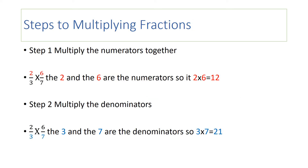Steps to multiplying fractions. Step one: multiply the numerators together. In the problem two-thirds times six-sevenths, the two and the six are numerators. So it is two times six equals twelve.